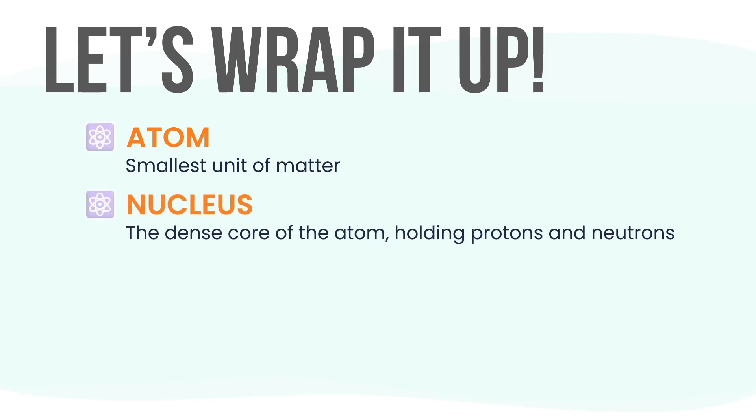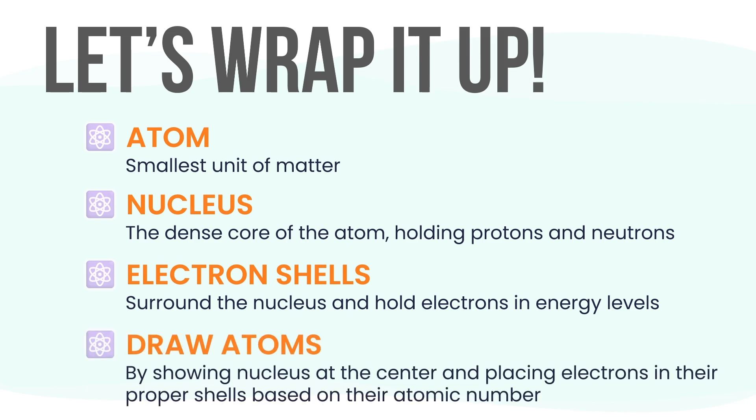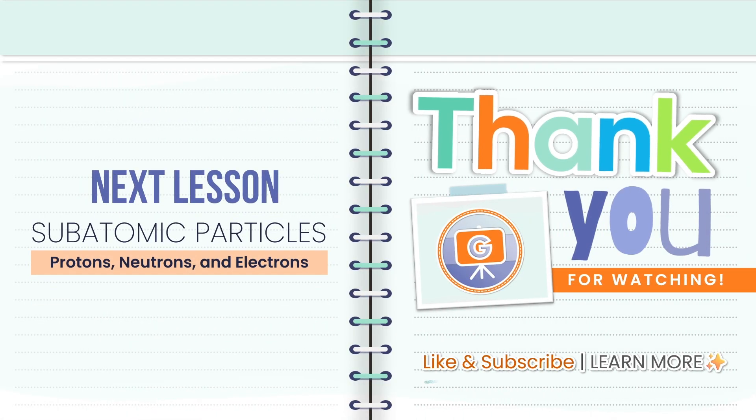Let's wrap things up. Let's take a final look at what we've learned. The atom is the smallest unit of matter, but it's made of even smaller parts. At its center is the nucleus, a dense core containing protons and neutrons. Surrounding the nucleus are the electron shells, where negatively charged electrons move in specific energy levels. We also practiced drawing atoms by showing the nucleus at the center and placing electrons in their correct shells based on the atomic number. This shows us how matter is put together. Atoms aren't just random dots—they have parts that make them behave a certain way. Next time we'll check out protons, neutrons, and electrons and how their properties affect an element's identity and reactivity.